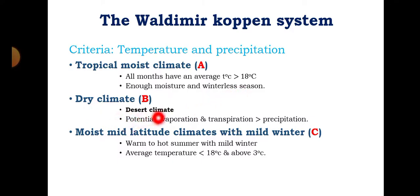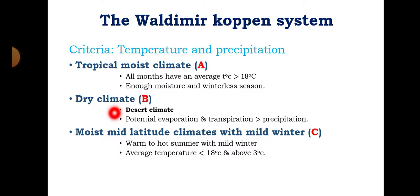Dry climate, letter B, is also called desert climate. In this region, potential evaporation and transpiration is greater than precipitation — so there is high evaporation and less rain, causing the soil to be dry and moisture deficiency in the region. Moist mid-latitude climate with mild winter, letter C, has warm to hot summers with mild winters, and an average temperature greater than 10°C and above -3°C.